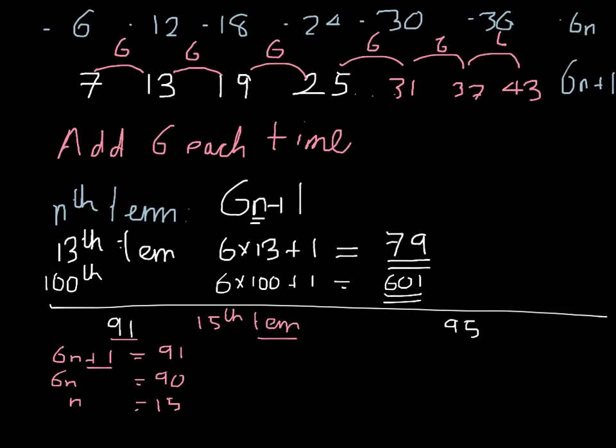On the other hand, 95, if we let 6n plus 1 is equal to 95, subtract 1 off both sides, 6n would be equal to 94. 94 divided by 6, n would therefore be a decimal. If you work out 94 divided by 6, you get a decimal.